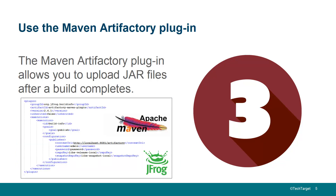People like to use Maven to build their applications, and they might as well use Maven to push the applications they build to a Maven repository. There's an Artifactory plugin for Maven that you can use — your developers can configure it with the URL of their Artifactory repository and upload the files they create as part of their Maven build. One thing to keep in mind: you probably don't want developers doing this directly. You probably want some sort of continuous integration process to do verifications and quality control and then push to Artifactory.